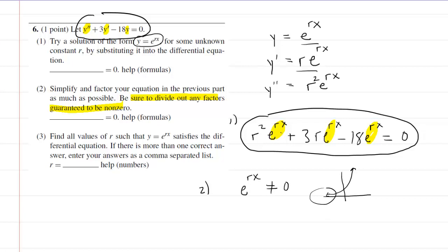So basically, if we divide out e to the rx, they're all going to cancel. And that's going to leave us with just r squared plus 3r minus 18 is equal to zero. And so this would be the correct answer to that second blank right here.